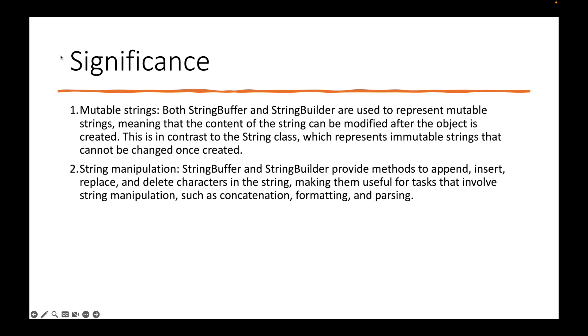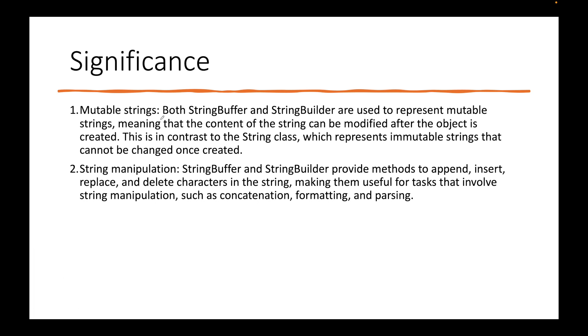Now let's talk about the significance — why these two classes actually came into being when we already had a String class. The first point is that they represent mutable strings. To understand this in detail, we need some context about how the String class behaves. The String class in Java is said to be immutable.